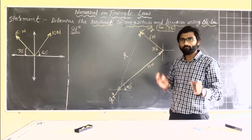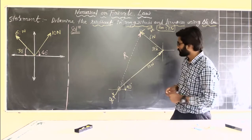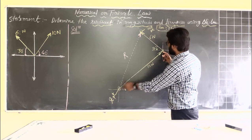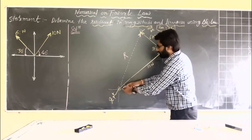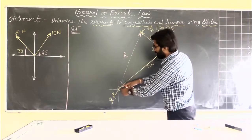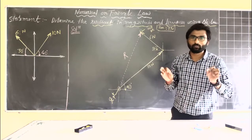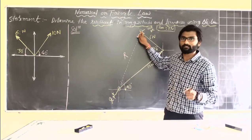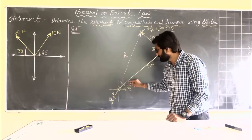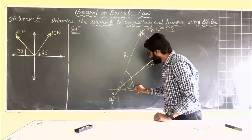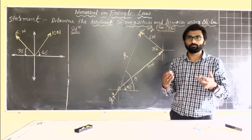If you have done this graphically, you can directly get the magnitude of the resultant using the scale. Draw a line making an angle of 30 degrees and measure 6 newton on it. Then measure the resultant line from start to end — for example, if this distance is 9 centimeters, then R equals 9 newton. For the direction theta, use a protractor to measure the angle with respect to the x-axis. However, here we are solving using the analytical method.